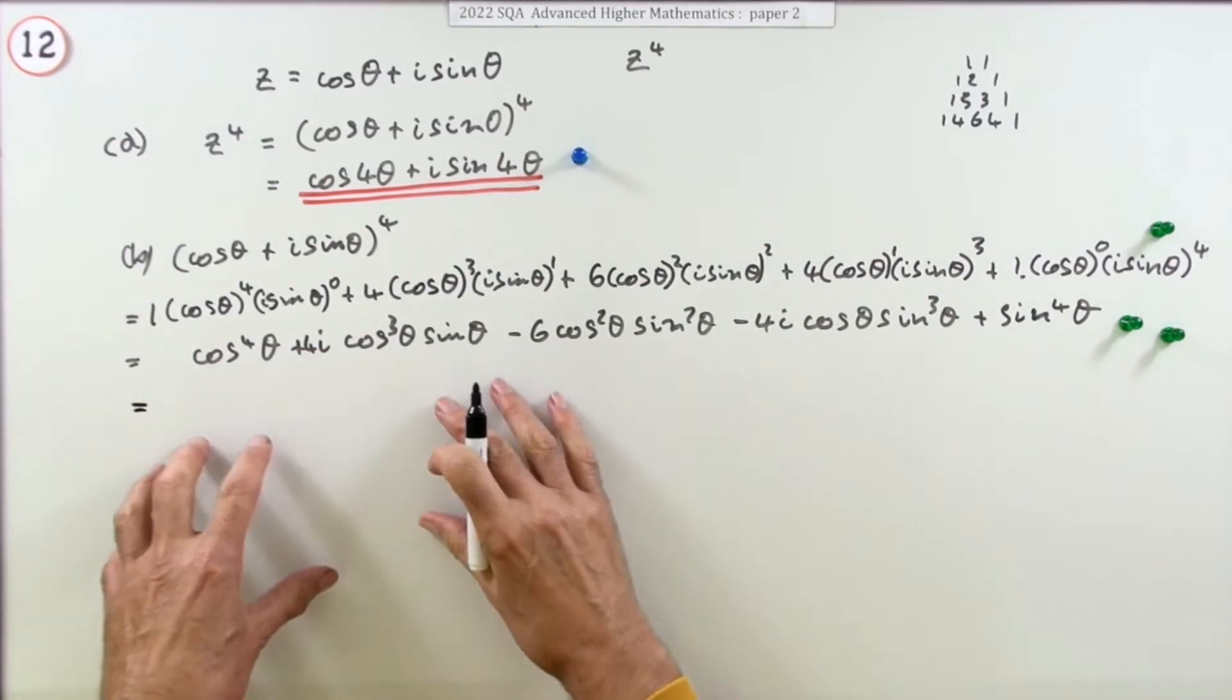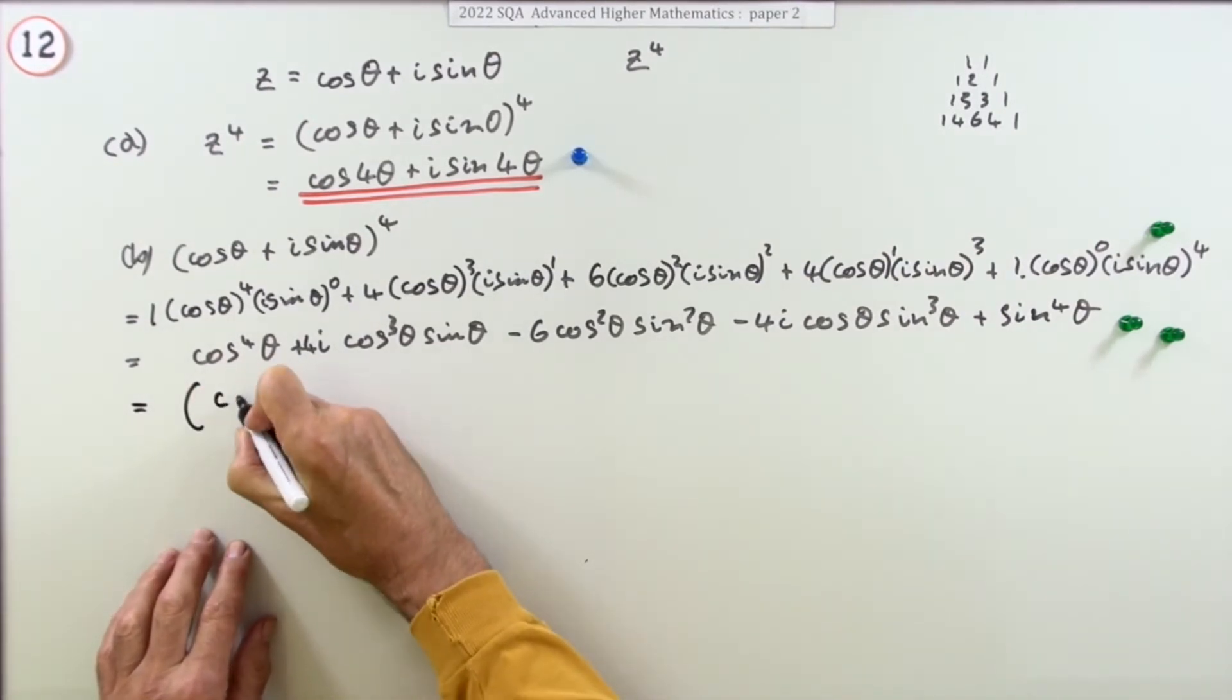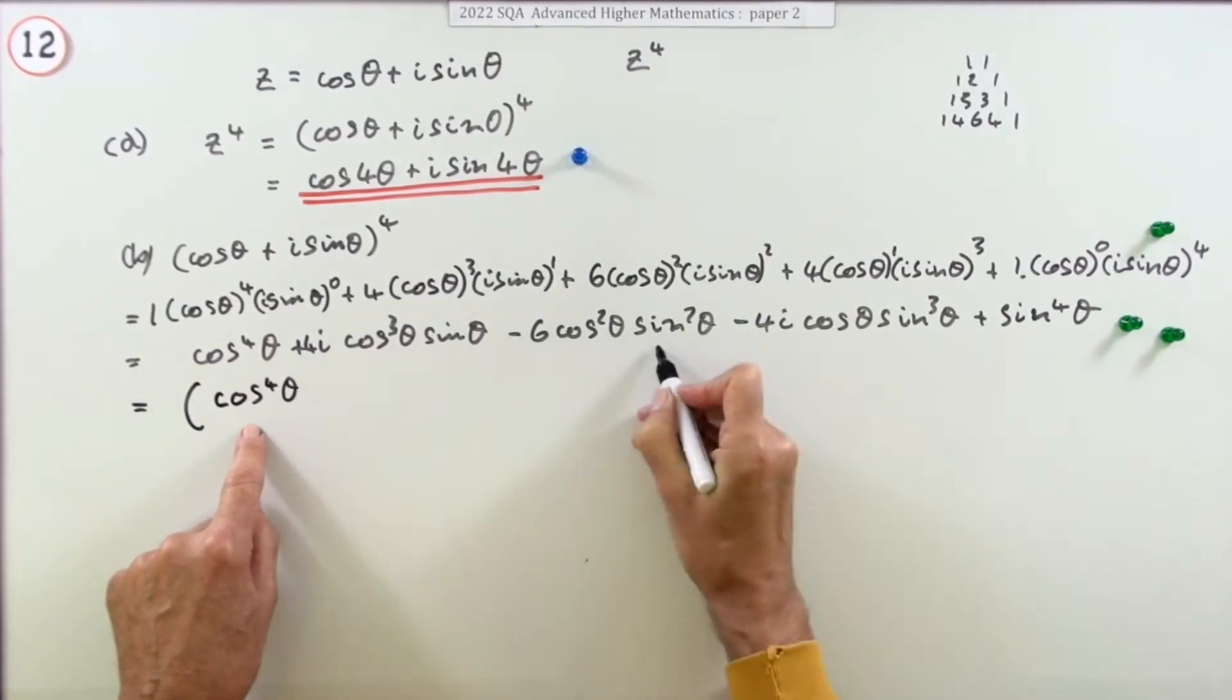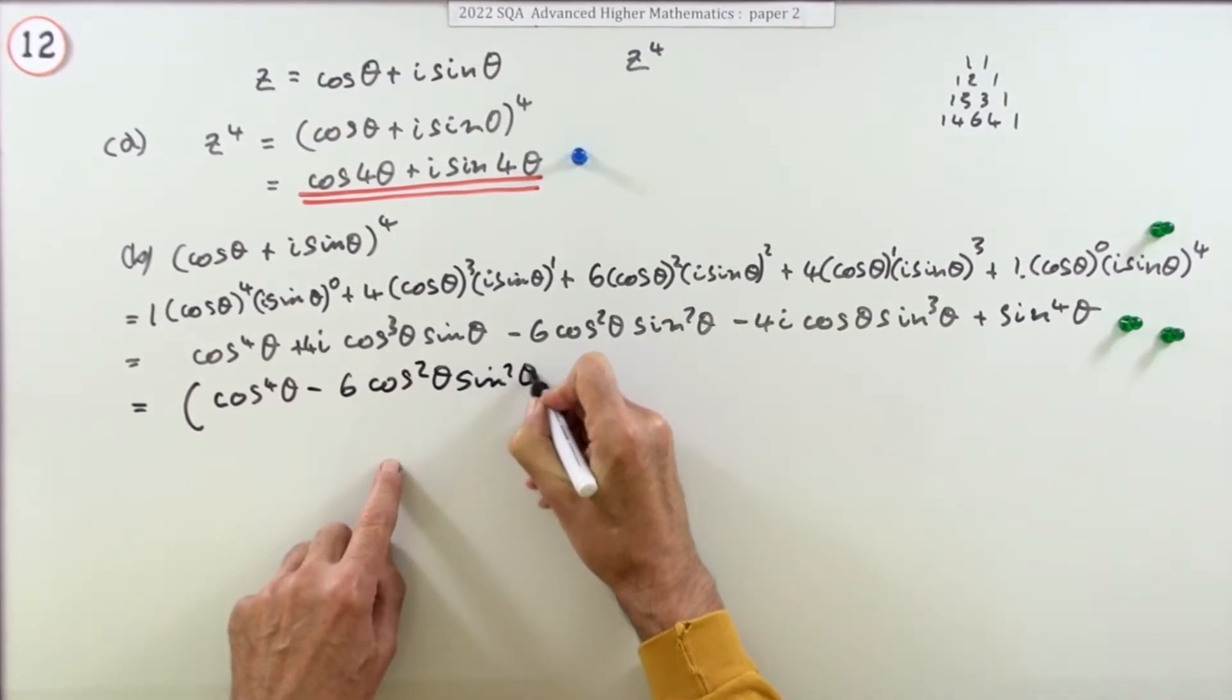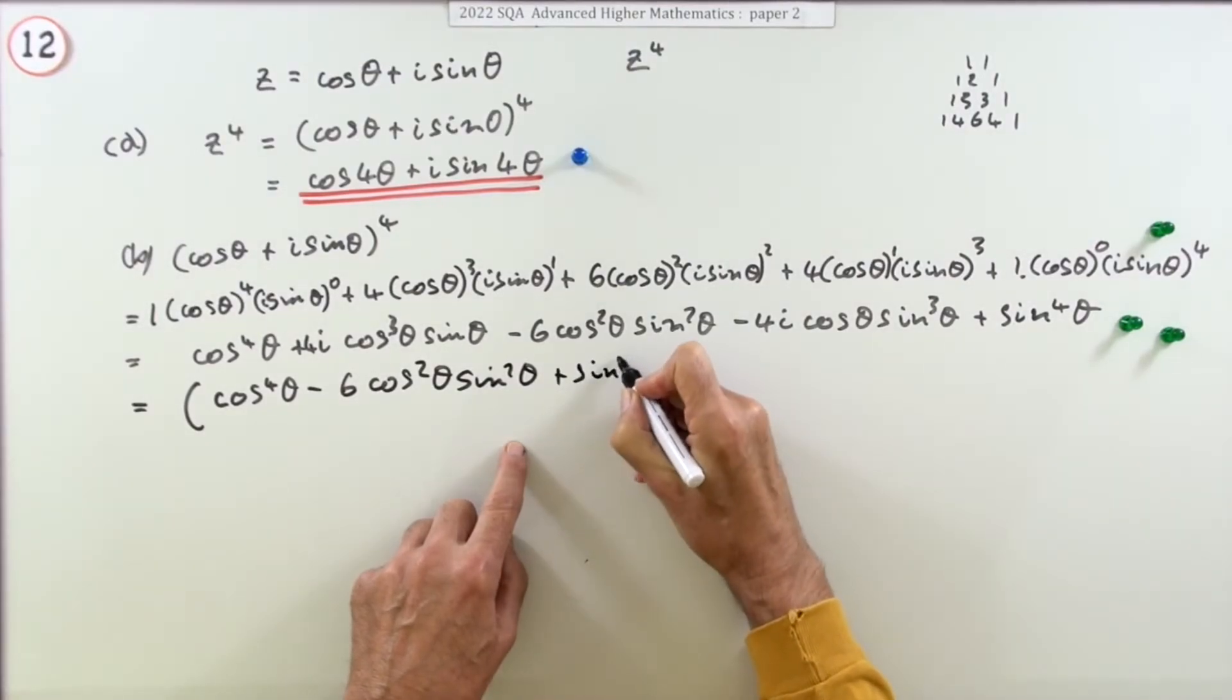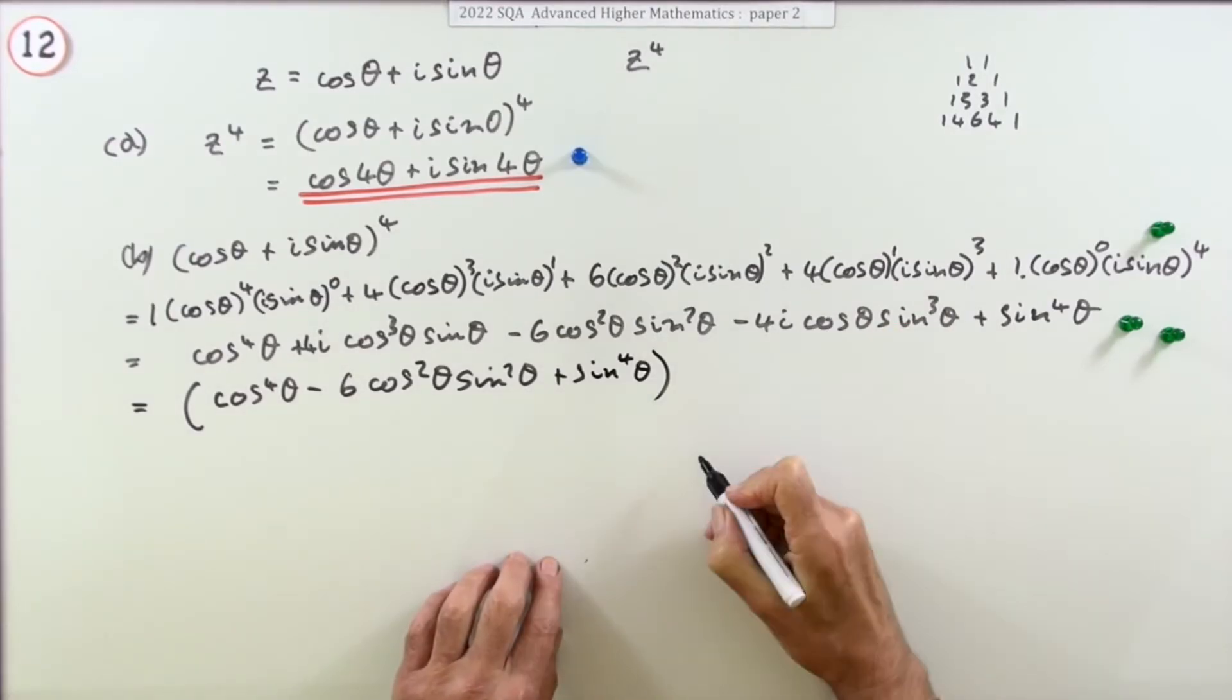I think I would tend to tidy that up though into its two parts, into the real part and the imaginary part. So I'd probably finish off by saying well picking out the real parts, anything that doesn't involve i would be cos to the 4 minus 6 cos squared theta sine squared theta plus sine to the 4 theta. That's the real part.